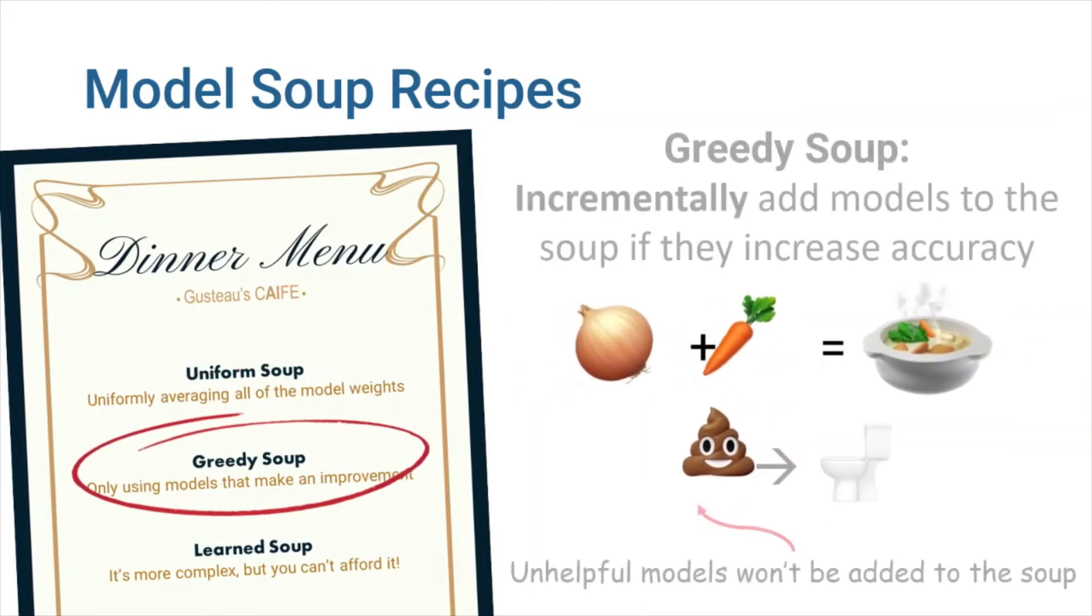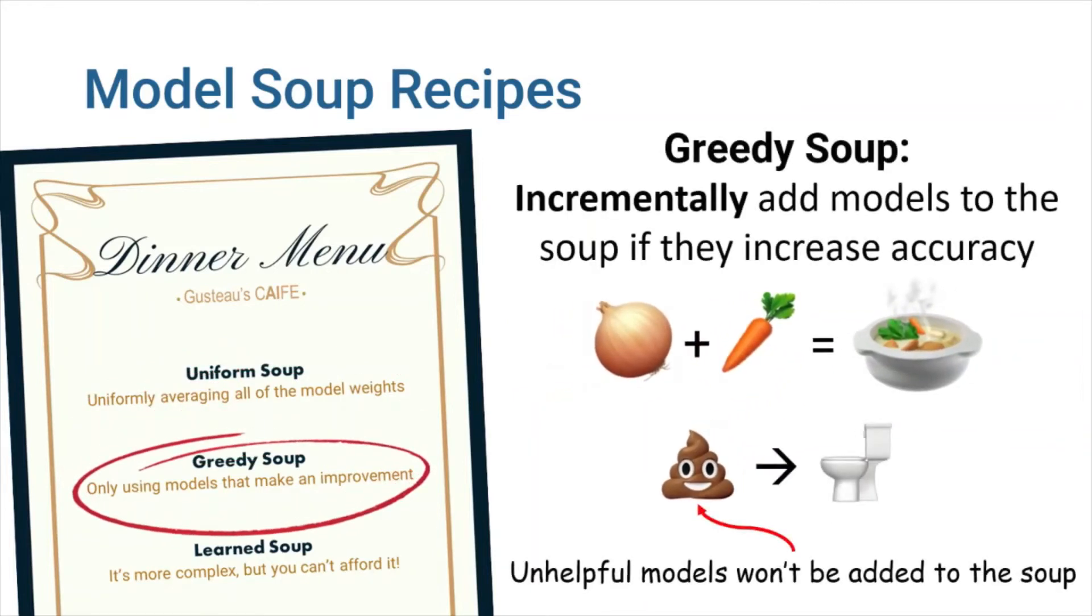Number two: greedy soups. Ingredients are incrementally added to the soup if they increase the accuracy of the held-out data.